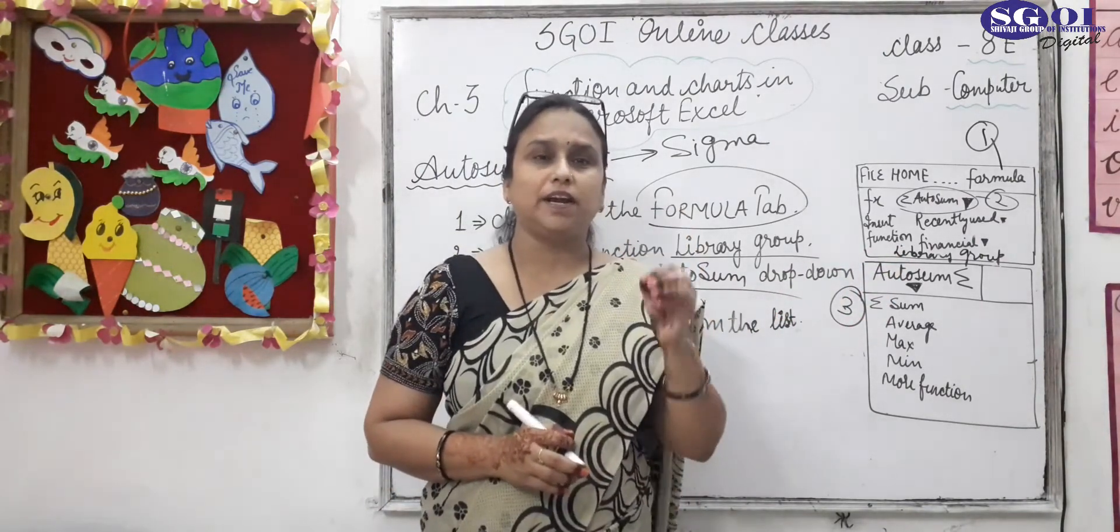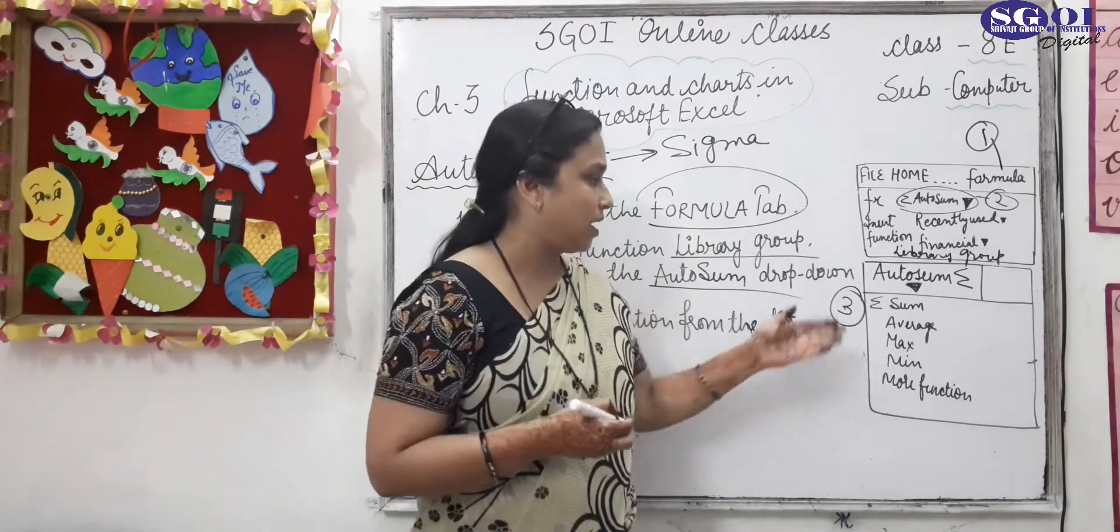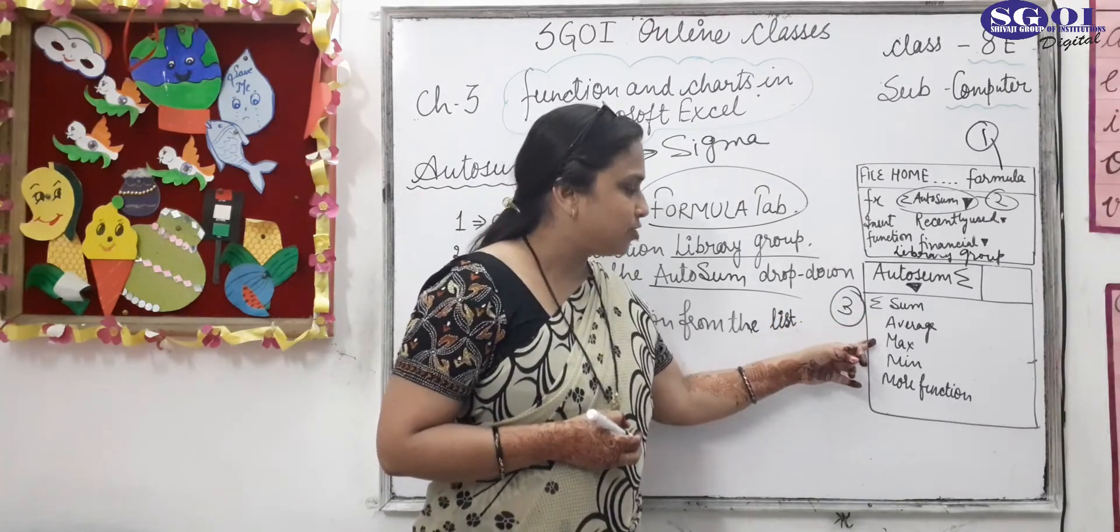Here you can see autosum, in the autosum you can see this symbol. This symbol is called sigma. It contains number of functions. These functions are like this: Sum, average, max, min.